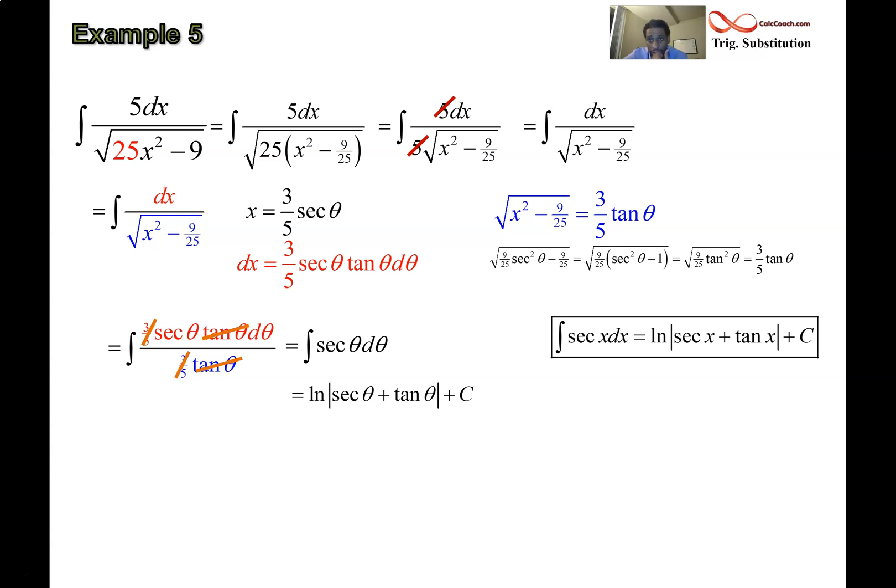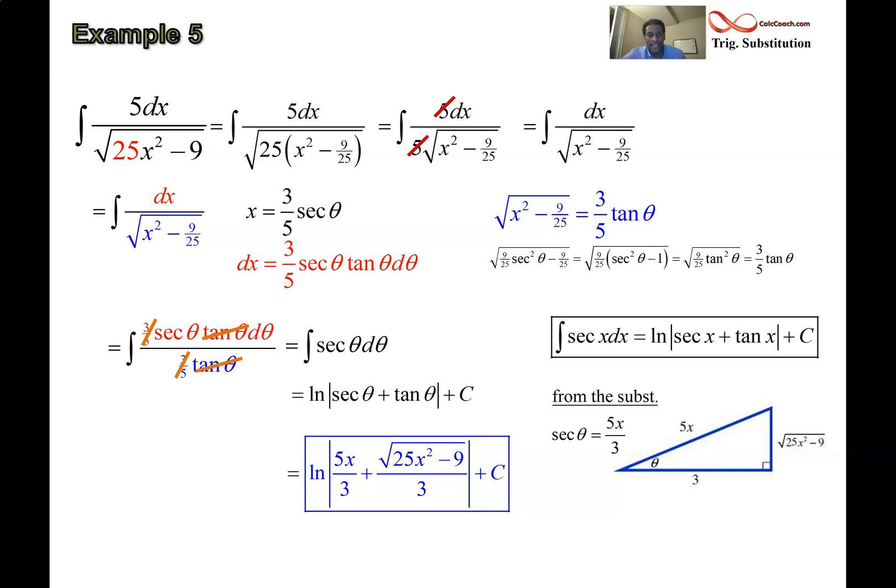But it's wrong. It's in a wrong variable. We need it in terms of x. The question came to us in terms of x. We already know what secant theta is. From our trig sub, we can see that secant theta, isolating it, would give us 5x over 3. So, we can replace that guy, 5x over 3. When it comes to tan theta, we can use the reference triangle for that. Secant theta is the reciprocal of cosine. So, it'll be hypotenuse over adjacent. The 5x will be the hypotenuse. The 3 will be the adjacent. The missing side, then, is the 25x squared minus 9. Pythagorean theorem can get that for you. So, what's the tangent of theta going to be? Opposite over adjacent. So, the radical 25x squared minus 9 over 3. And then, you're done. You got it in the right variable. That is the antiderivative of that function. So, if there's a coefficient in front of the x squared, you have to factor it out.